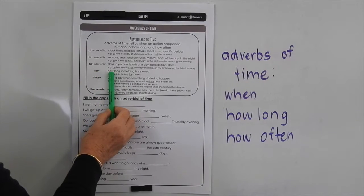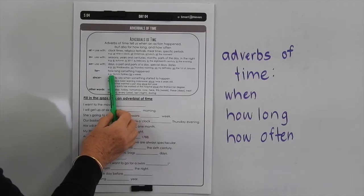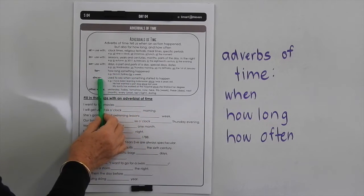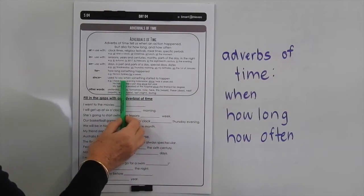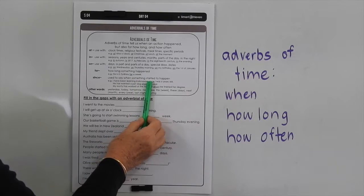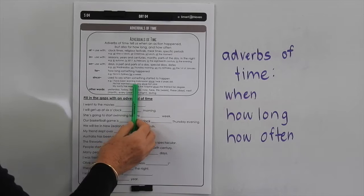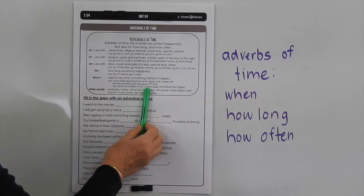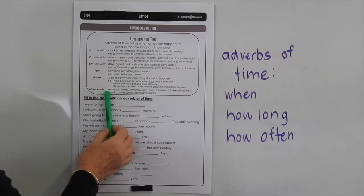For is used to say how long something has happened — for example: he is in Sydney for a week, which tells us how long. Since is used to say when something started to happen: I have been learning Indonesian since I was six years old; he has wanted a pet dog since last year; my auntie has worked at the hospital since she finished her degree.